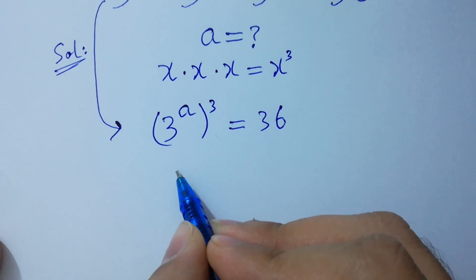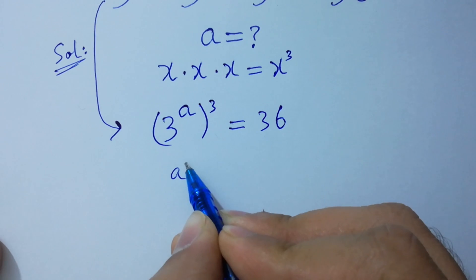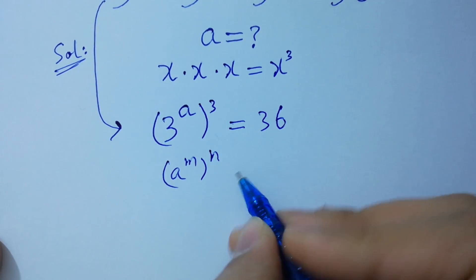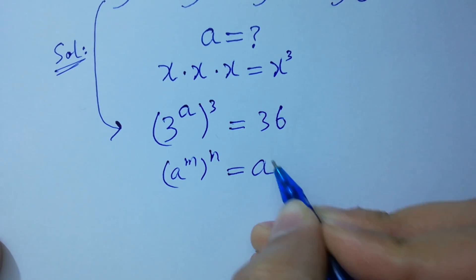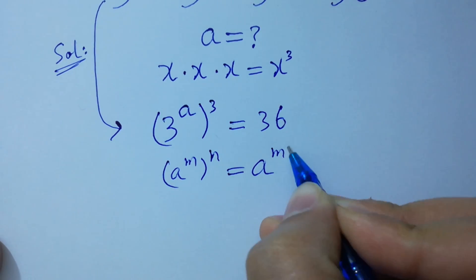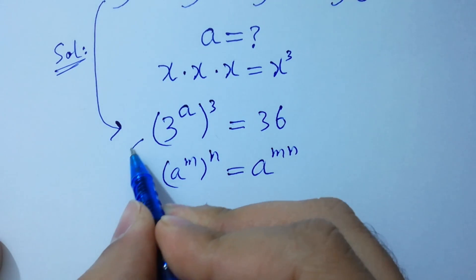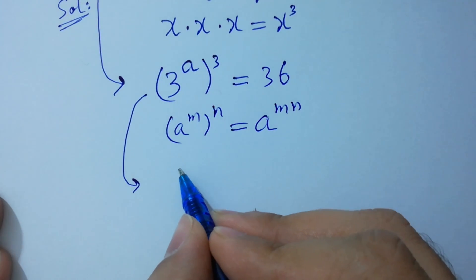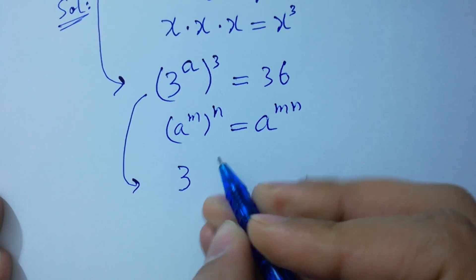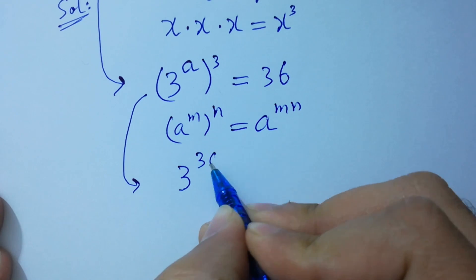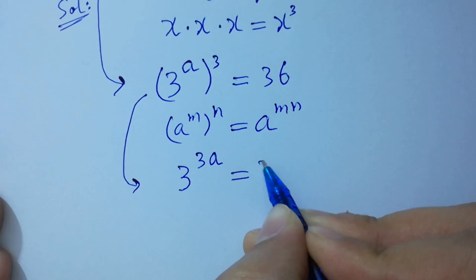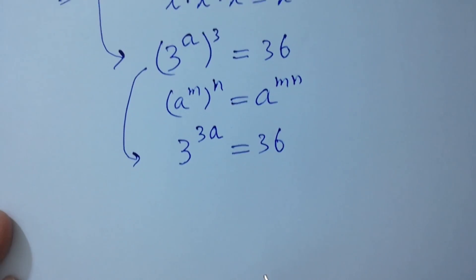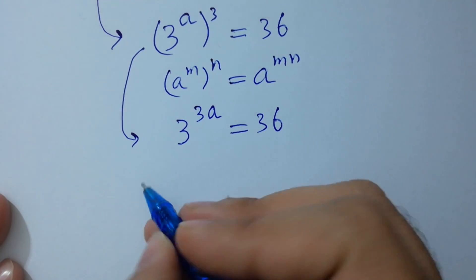As a to the power m, to the whole power n, equals a to the power mn, we have 3 to the power 3a equal to 36. Take log on both sides.